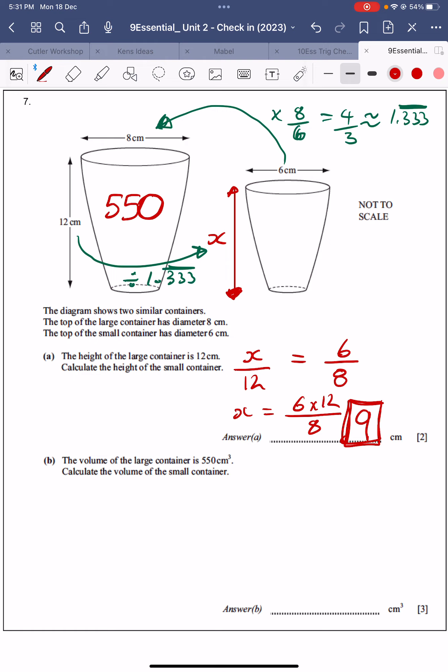And we want to find the volume of the small one. So I'll call the volume of the small one y. And now we can just do the same thing in terms of finding the missing value y. We can do it as a ratio, or you can do it with a scale factor. I'll do it as a ratio.